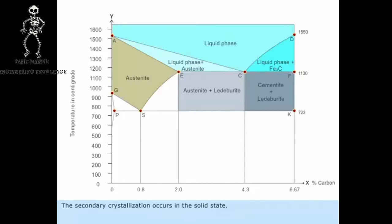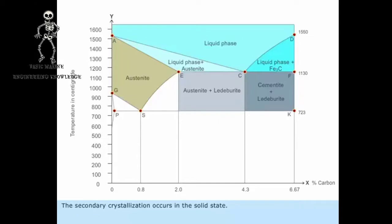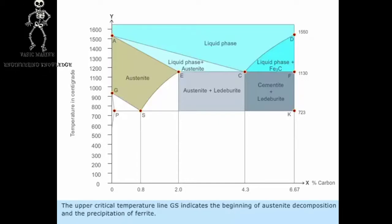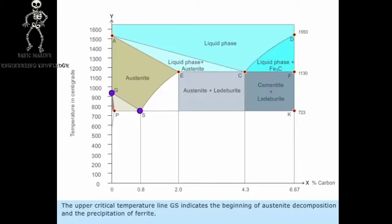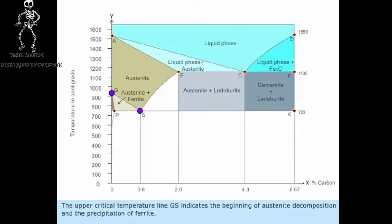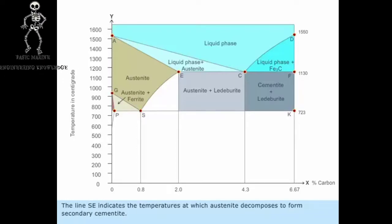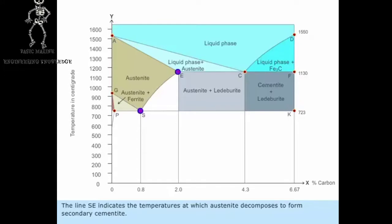The secondary crystallization occurs in the solid state. The upper critical temperature line GS indicates the beginning of austenite decomposition and the precipitation of ferrite. The line SE indicates the temperatures at which austenite decomposes to form secondary cementite.